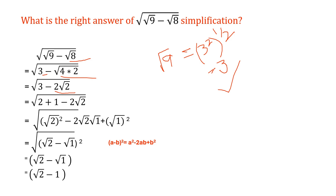Now we need to think a little bit about how we can simplify this expression. We can write 3 as 2 plus 1, and 2 root 2 stays the same. We then see a pattern in this line — it looks like the formula for (a minus b) whole squared.